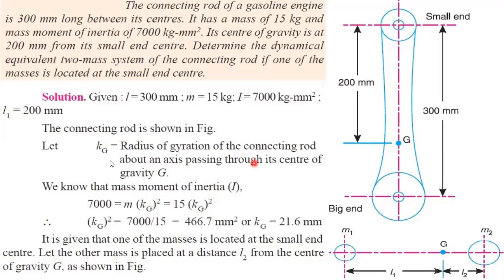The radius of gyration kg of the connecting rod is about an axis passing through its center of gravity. We know the mass moment of inertia formula I is equal to mk². The I value and mass of 15 kg are given. Rearranging for kg and taking the square root, we finally get the value of kg as 21.6 mm.